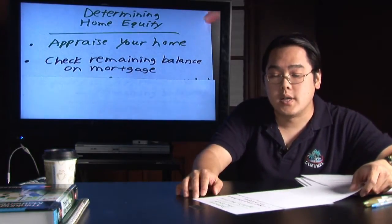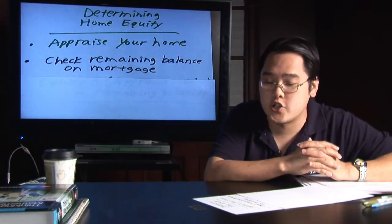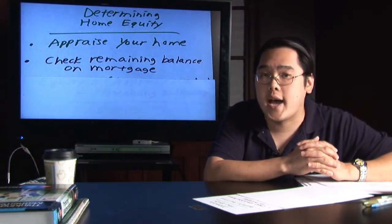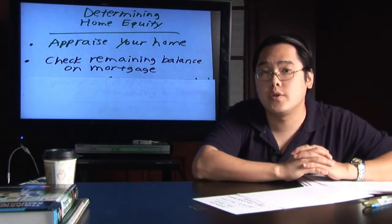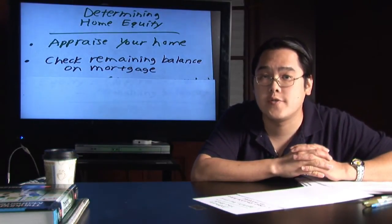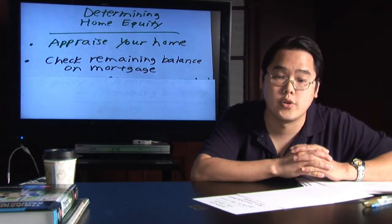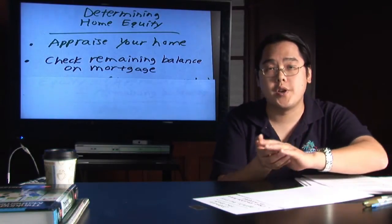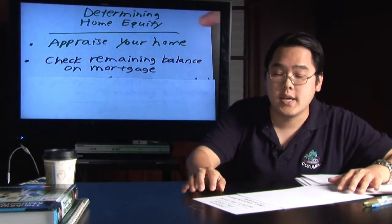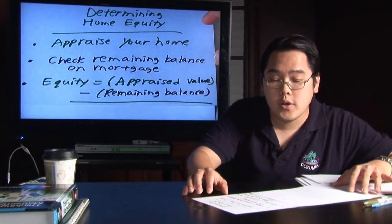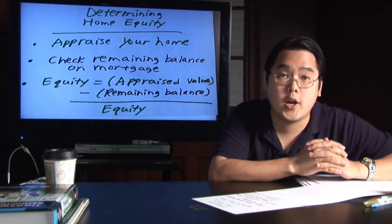The second step is you need to figure out how much you owe on your mortgage — check your remaining balance. You can access that via your mortgage statement that comes in every month, or you can call the number of your lender to figure out how much you still owe. That's also a very important number, because what you're going to be doing is comparing what you owe on the mortgage versus how much your home is worth to figure out your equity.